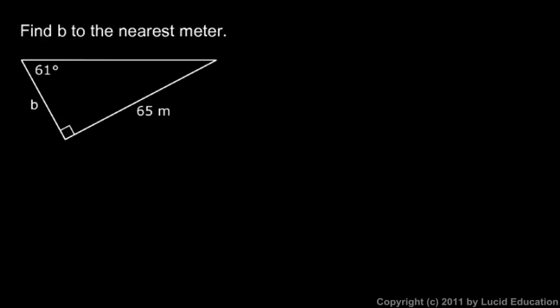The next problem: we're told to find b to the nearest meter. This is side b, and this length here is 65 meters, with an angle of 61 degrees. The tangent comes in useful again — tangent is opposite over adjacent, so what side is opposite the 61 degree angle?